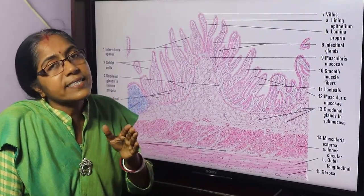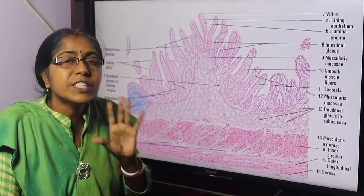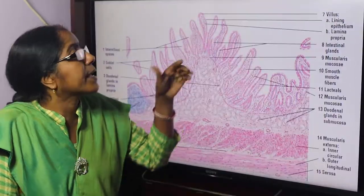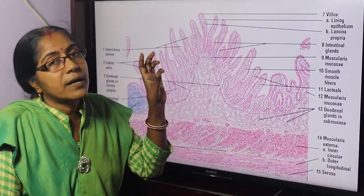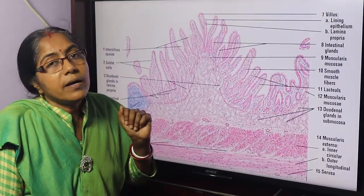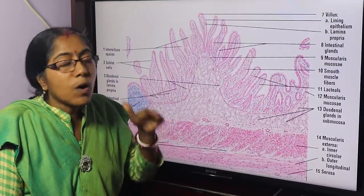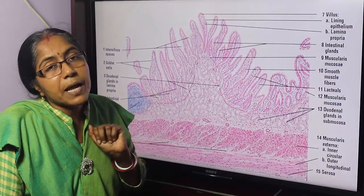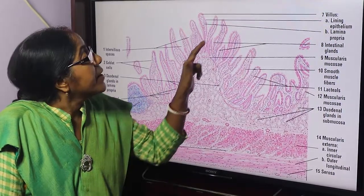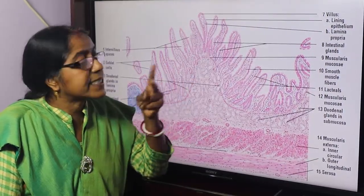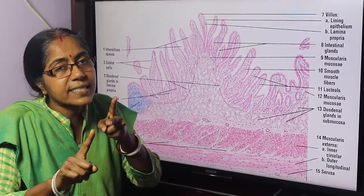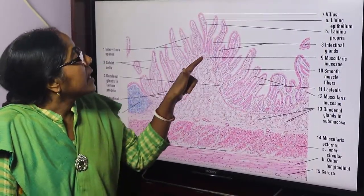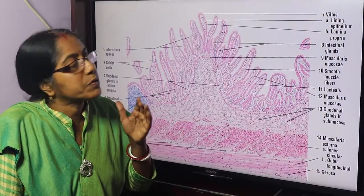These finger-like extensions are the villi. But in terms of shape, in the case of the duodenum, the villi are tongue-like — wider and longer. So the shape is tongue-shaped, while in general terms we call them finger-like extensions. The mucosa description: mucosa is composed of lining epithelium, lamina propria, and muscularis mucosa.